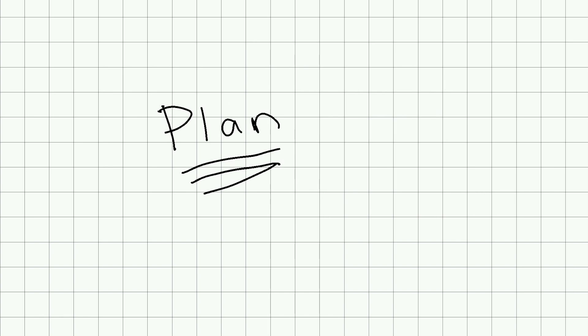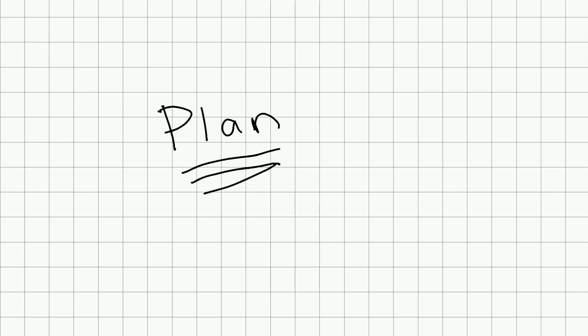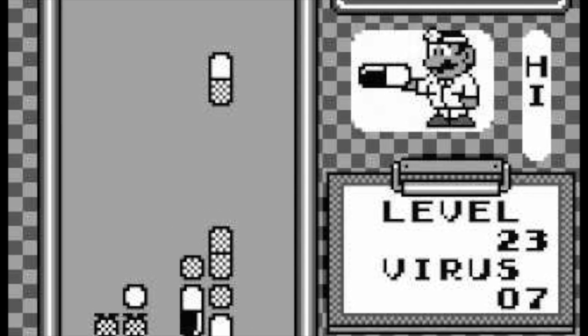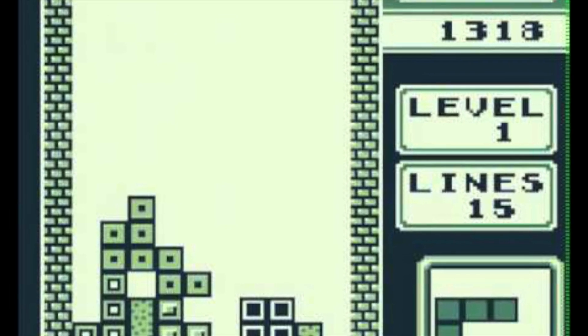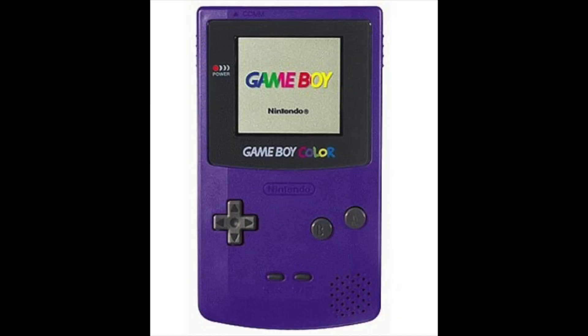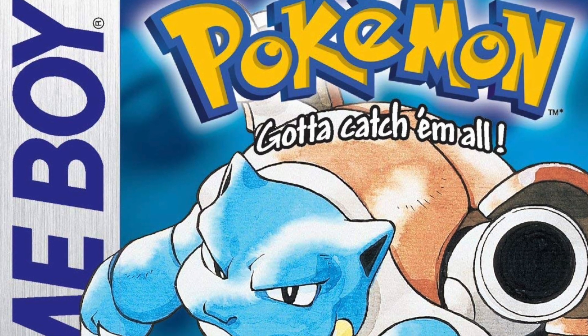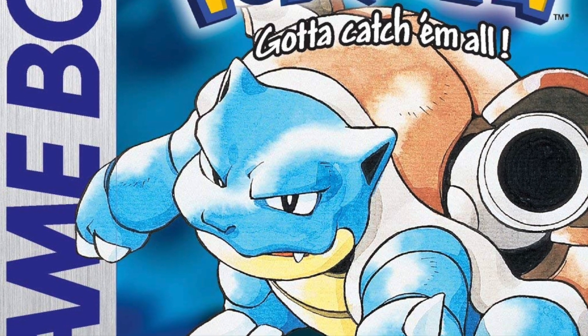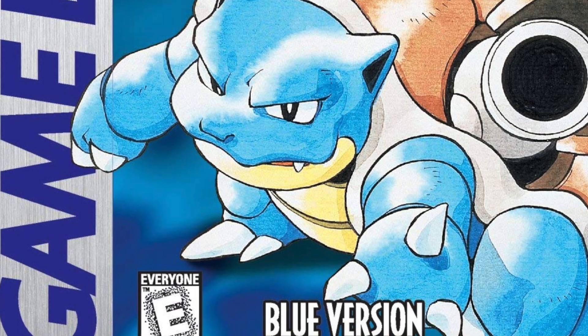The plan: the first thing is to get the boot logo to animate down — it looks like this. Then the first game that really makes sense to get working is Dr. Mario — it's pretty simple. Tetris is also pretty simple, maybe that's what you do after Dr. Mario. Then at some point we'll get Super Mario Land working, and after that we'll start doing Game Boy Color stuff and get Pokemon Blue working — because Pokemon Blue is like the Holy Grail. I know Pokemon Blue is a Game Boy game, not a Game Boy Color game, but I played it on a Game Boy Color, so we've got to get that working.